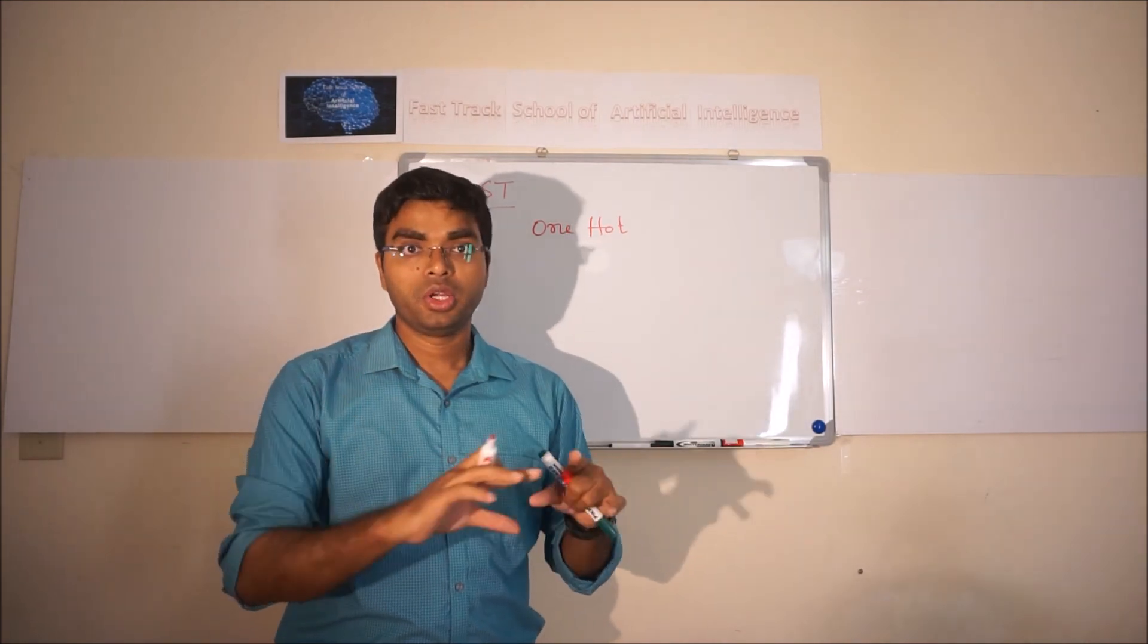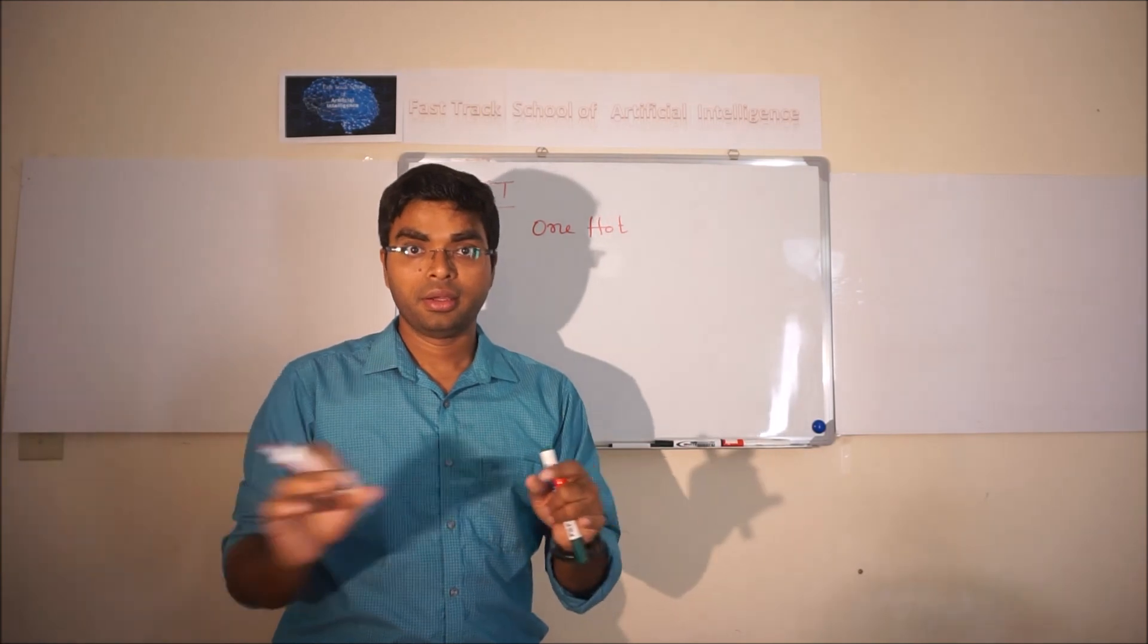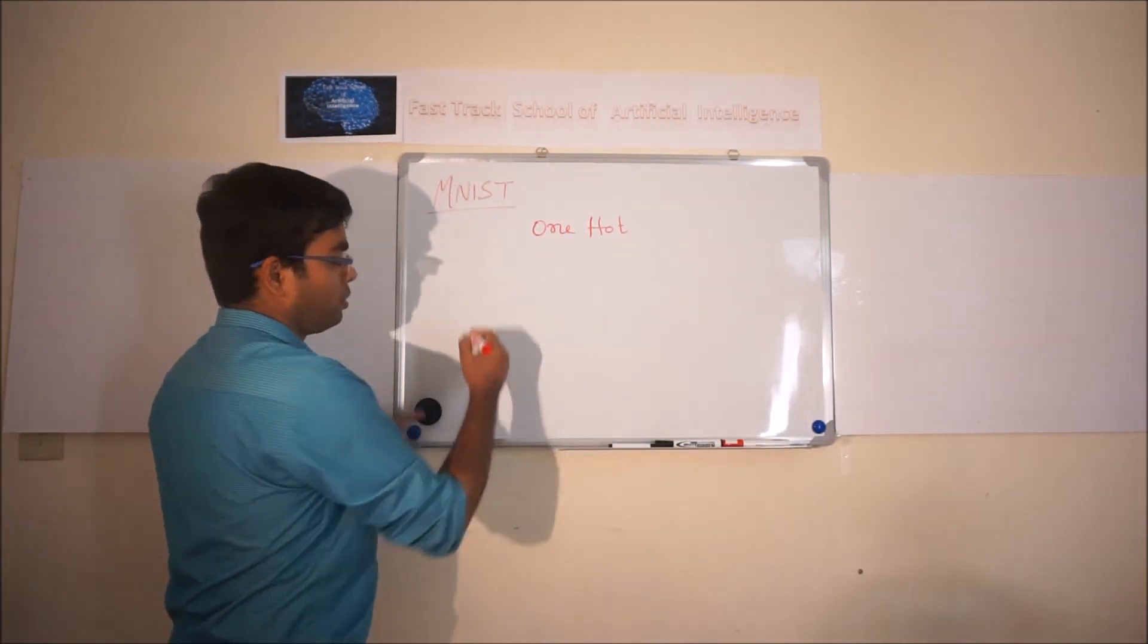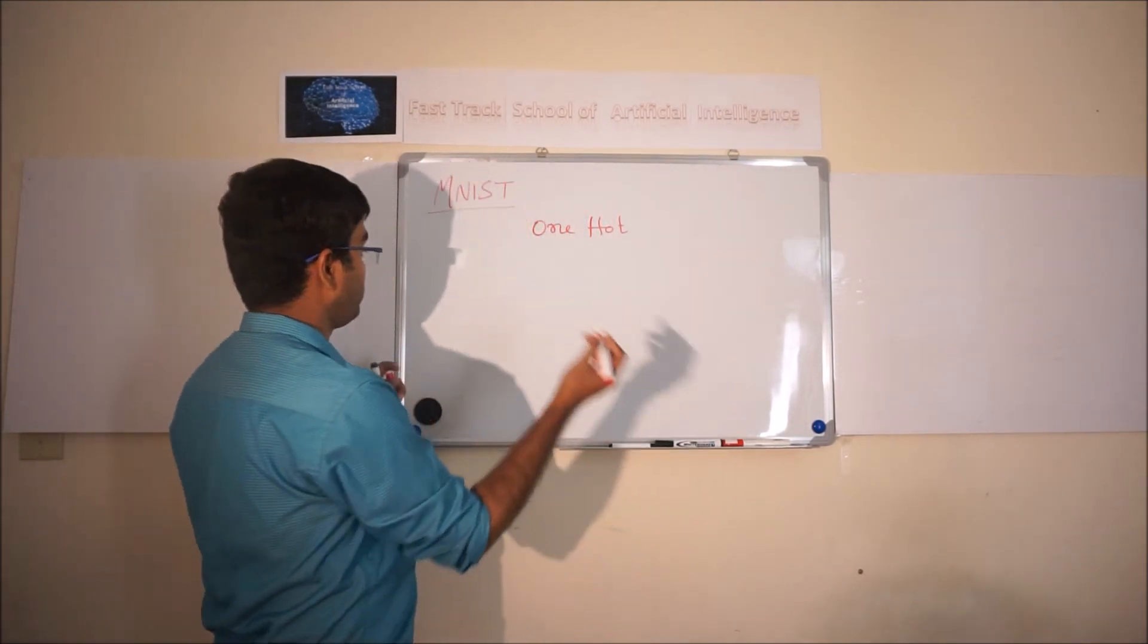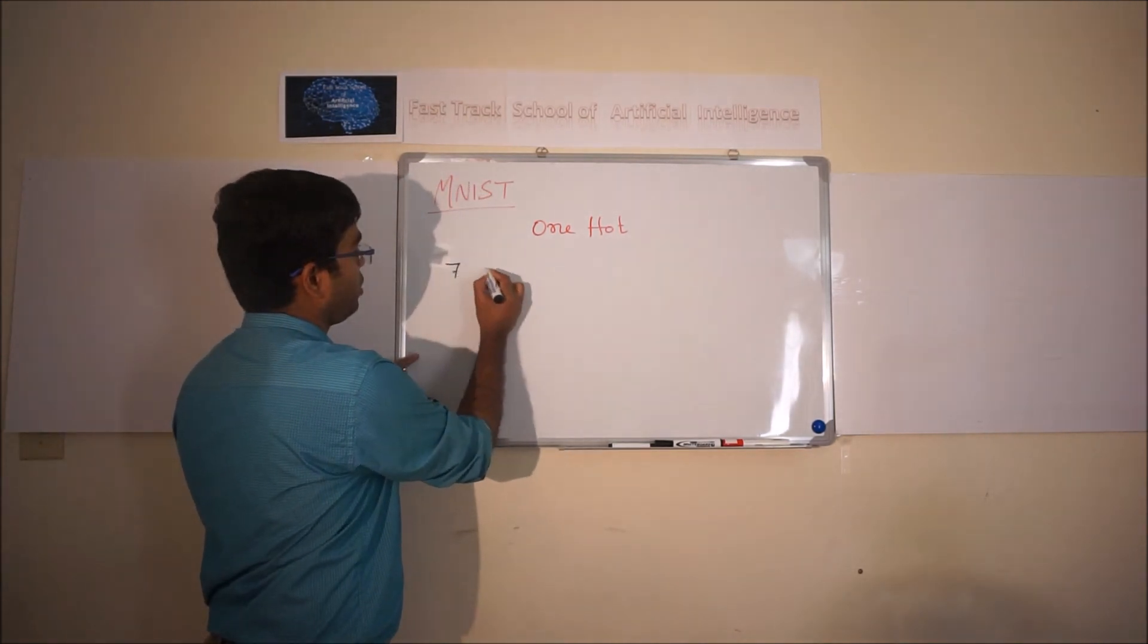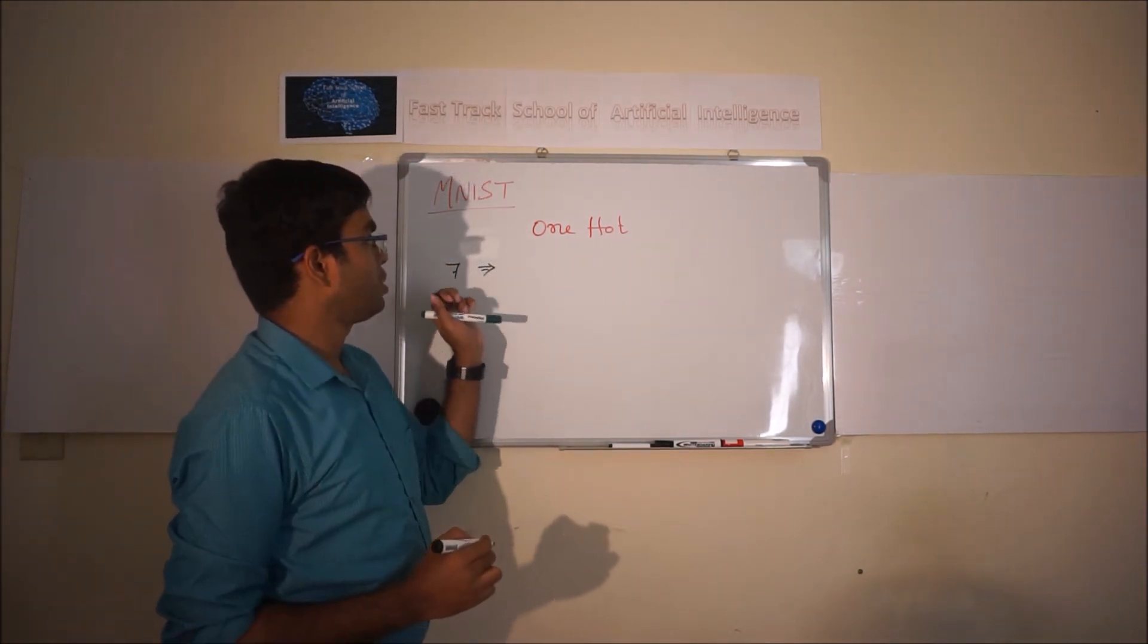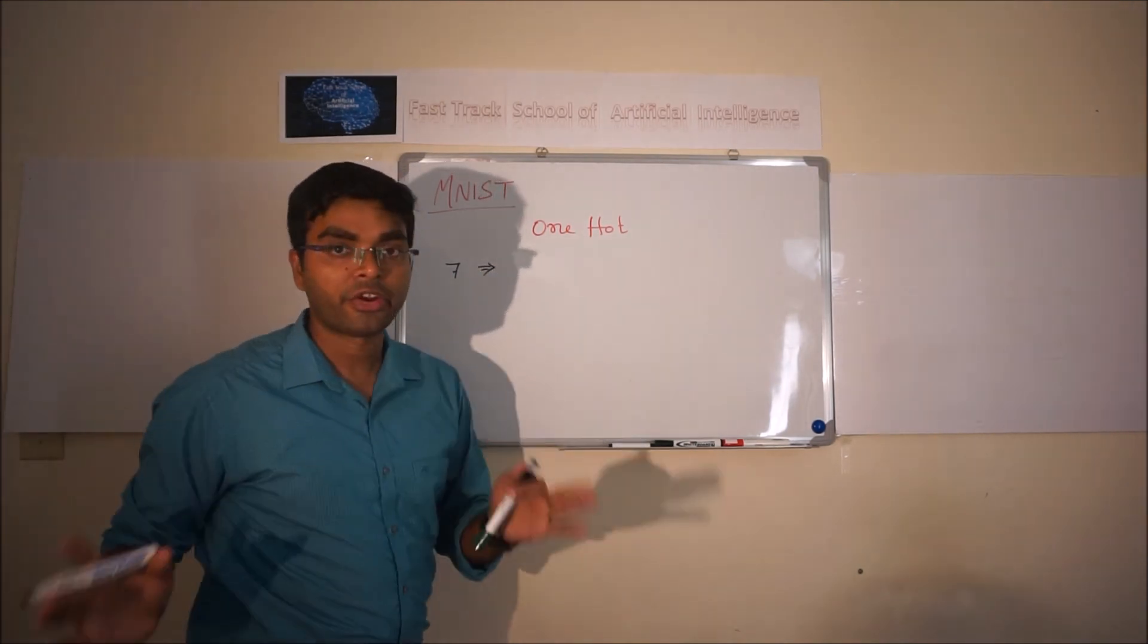It is converted to represent in the form of array of true classes of all the possible classes. I will write down the example, it will be much easier to understand. Suppose we have one example called number 7, and we want to represent it as one in one hot mode, and we have got 10 different classes from 0 to 9.